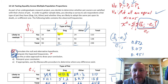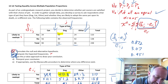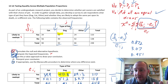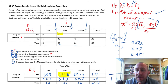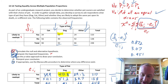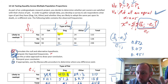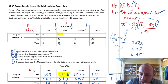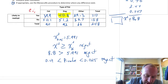Hello, welcome back. This is hopefully going to be a short little video just to run through the Marascuilo procedure to determine where the difference exists. In the first video for this exercise, we determined that we had sufficient evidence to reject the null hypothesis — so not all of these proportions are equal. Now we need to figure out which one is different. The Marascuilo procedure requires a couple of calculations.